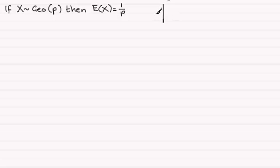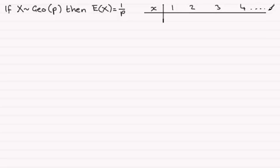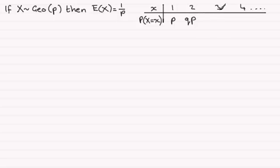First, suppose we draw up a probability distribution table for the random variable X. The observed values X can take are 1, 2, 3, 4, and so on — remember, it goes on theoretically forever. The probability of X equaling x: getting a success on the first go is P; on the second go, one failure Q multiplied by P; on the third go, Q squared times P; on the fourth go, Q cubed times P, and so on.